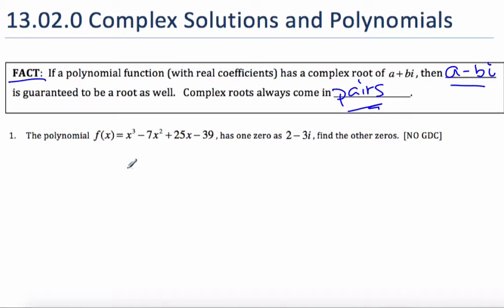Here's an example. If I know this particular polynomial has one zero of 2 - 3i, then another zero I know for sure is 2 + 3i. If I want to find the third zero, because it's an x cubed, I can use these to find it.